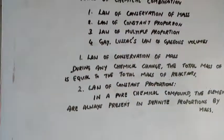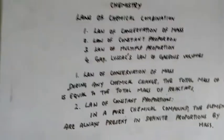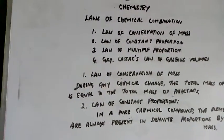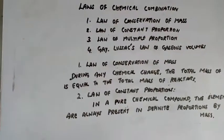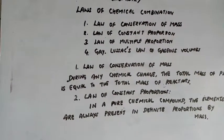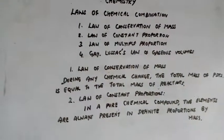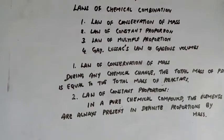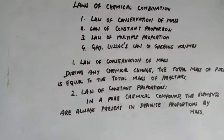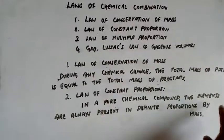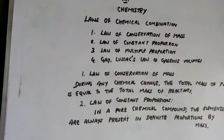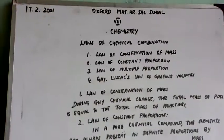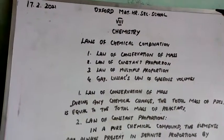So they define it like this: in a pure chemical compound — for example, water — the elements are always present in definite proportions. Hydrogen and oxygen are always present in definite proportions by mass. Only these two laws are given in your textbook. The remaining laws you will study in higher classes.